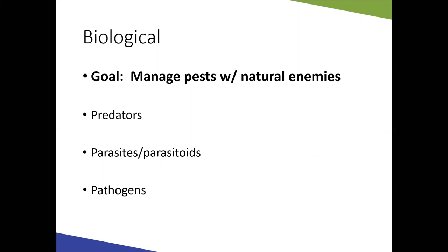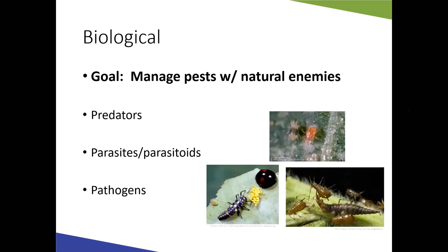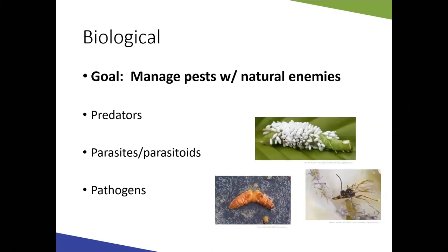Biological control uses natural enemies to control pests. Just because you see an insect in the garden doesn't mean it's a bad thing. Predatory mite species and lady beetles — both larvae and adults — will feed on aphids and other small soft-bodied insects. Lady beetle larvae look nothing like the adults, so people sometimes mistake them for pests and kill them. Aphid lions — lacewing larvae — also feed on soft-bodied insects. Make sure you get an insect identified before trying to kill it.